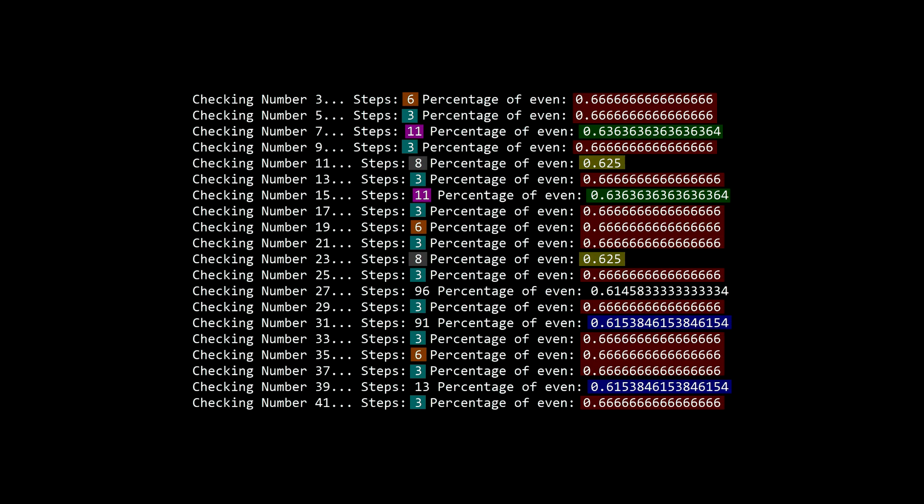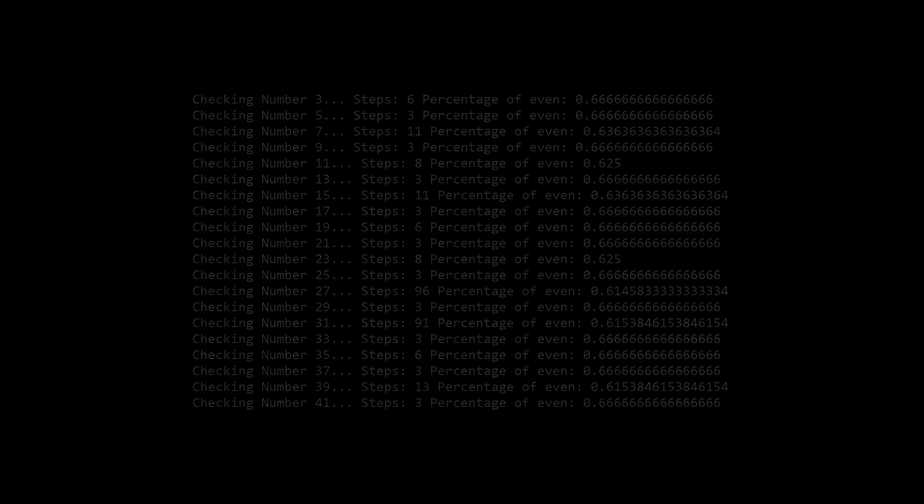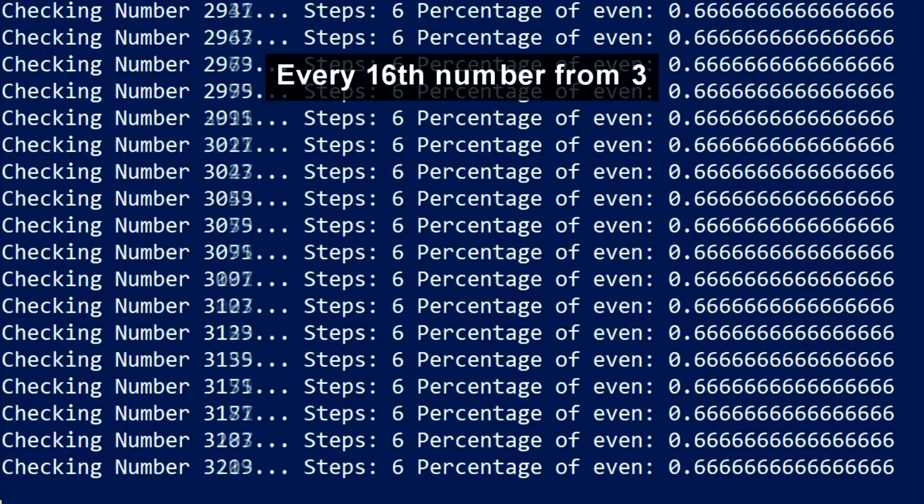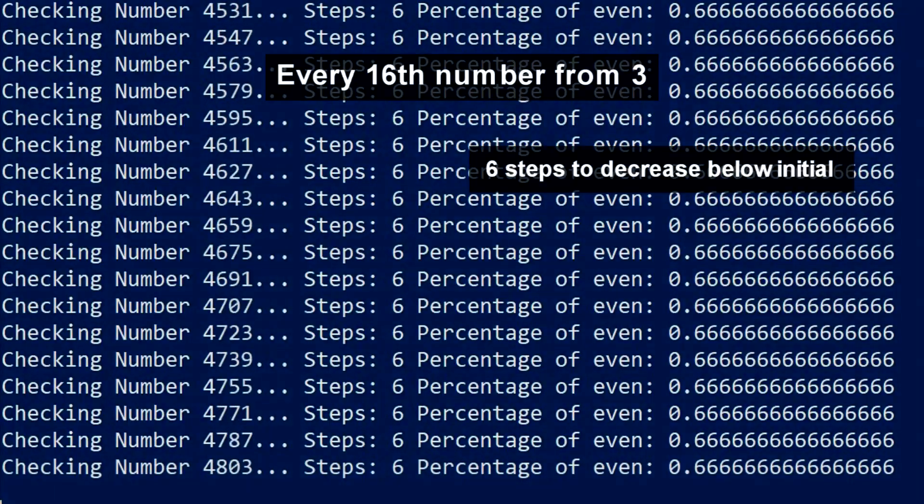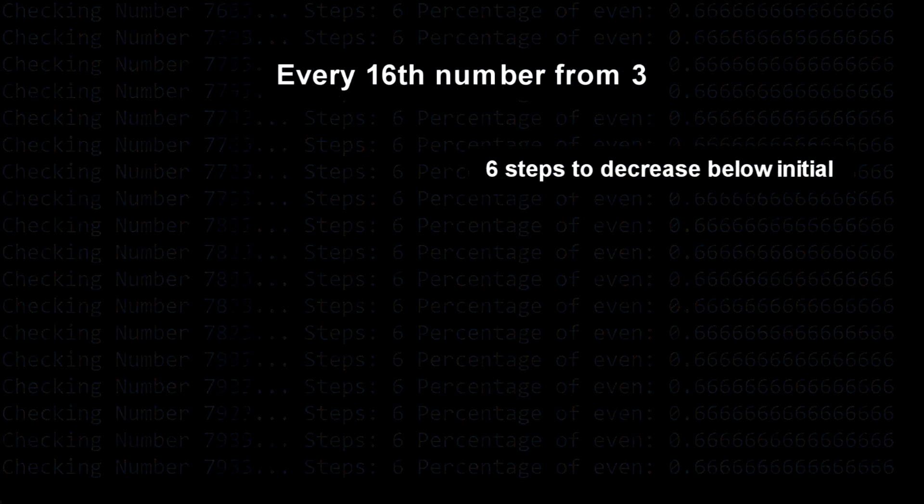But for a pattern to have any significance, I wanted to see where both the total steps and percentages repeat. It seemed like every 16th number starting at 3 had the same total steps and percentage, so I made some adjustments to only output these results. Why is it that every 16th number starting at 3 takes exactly 6 steps to get below starting value, and the percentage of even numbers to be this?